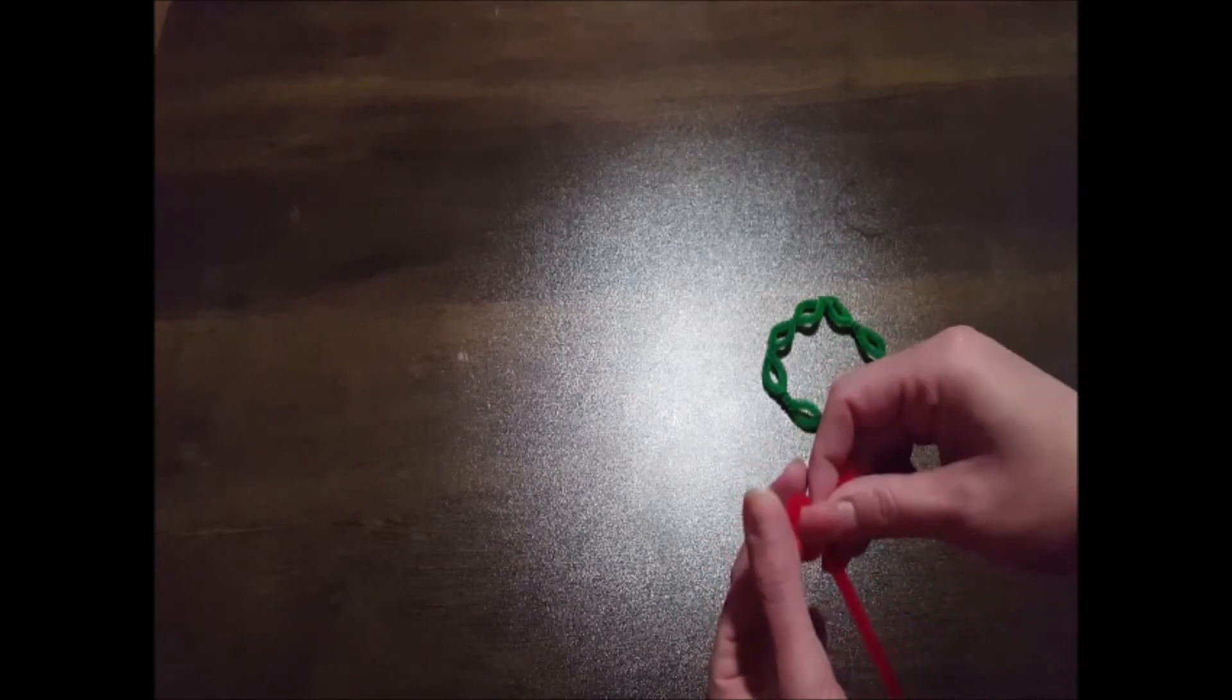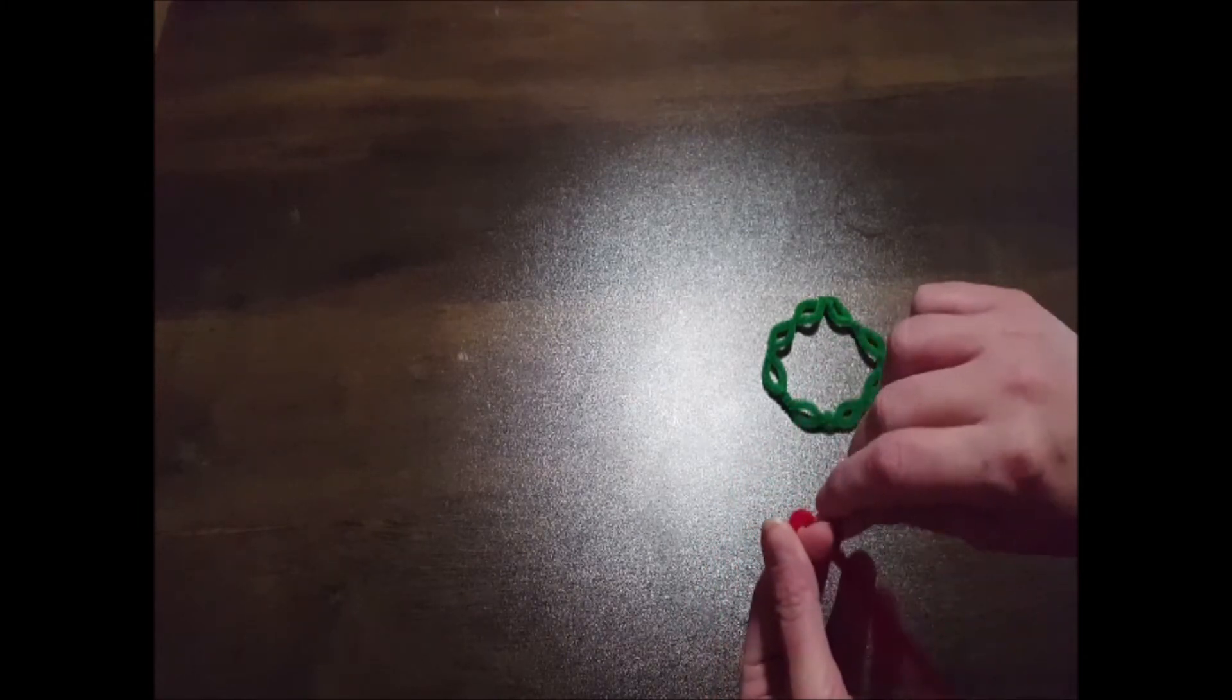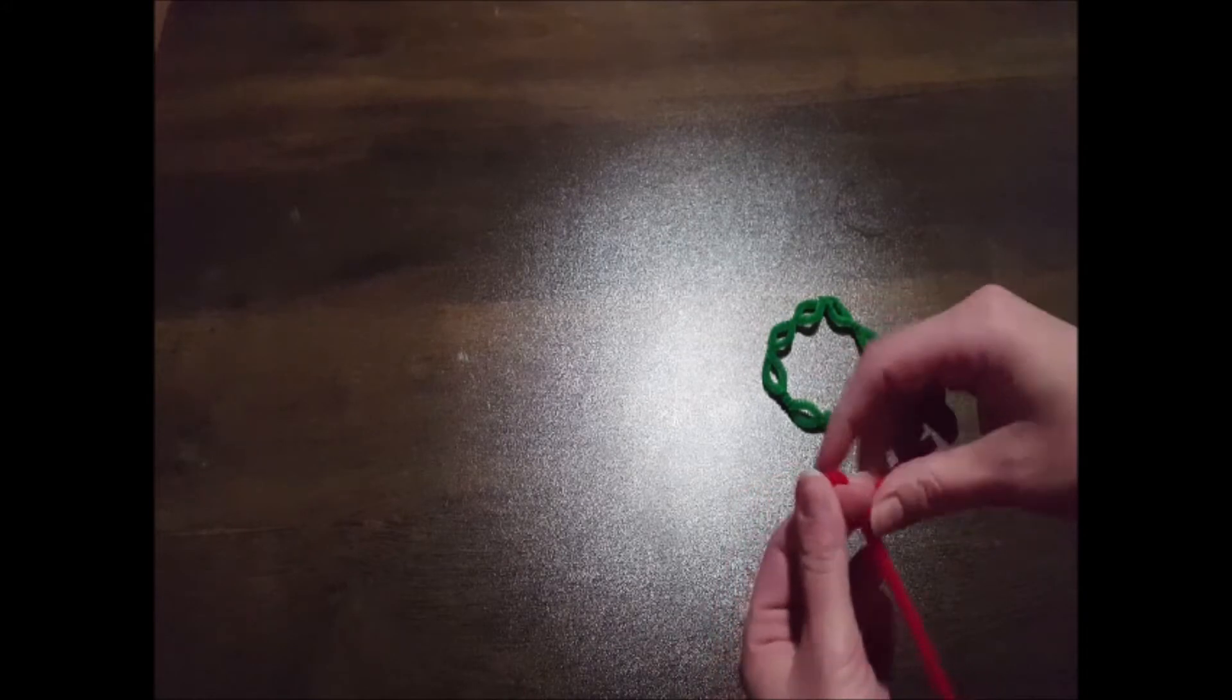Next, you're going to want to make a bow with your red pipe cleaner. Wrap a loop, using your finger again, as a guide near the center of the red pipe cleaner. And repeat that process on the other side. You want a symmetrical shape to this. You want both loops to be about the same size and about towards the middle.